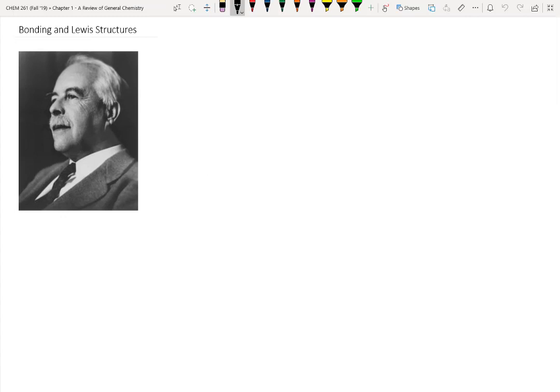Does anybody know the name of this chemist? Gilbert Lewis. Gilbert Lewis is, I call him the godfather of organic chemistry. He's got a really interesting story. He was a rather unpleasant human being from what I've read about him. People didn't like him very much. He was nominated for the Nobel Prize 41 times. Never got it. People just didn't like him very much.